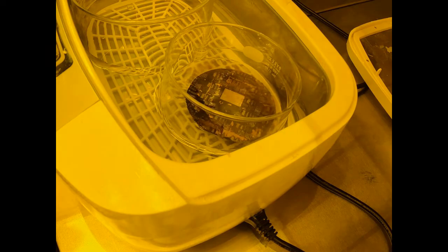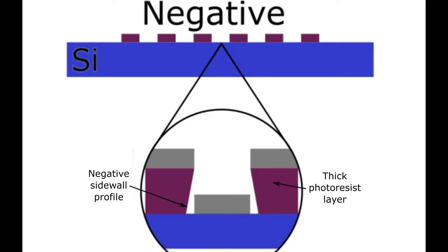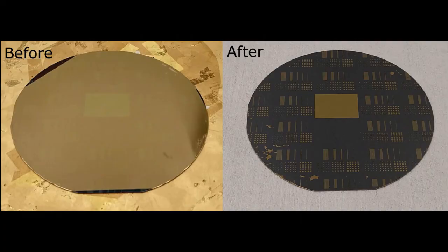Liftoff is unusual as the layer we wish to remove is underneath the desired material. Therefore, we must use a thick layer of photoresist with a negative sidewall profile to ensure the solvent can reach the photoresist without damaging the liftoff layer. Here is a metal layer removed by acetone with sonication.